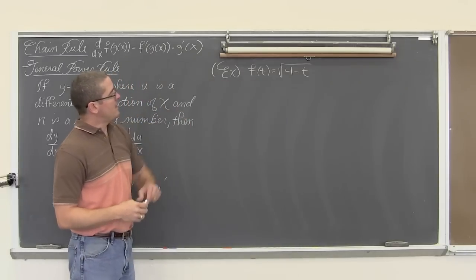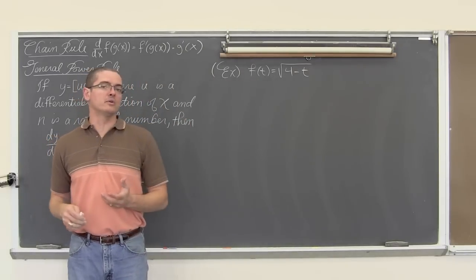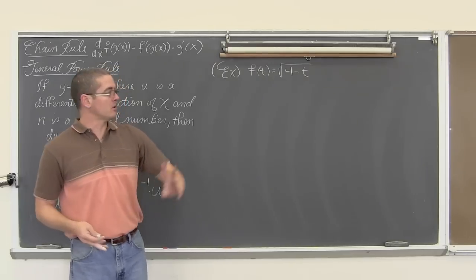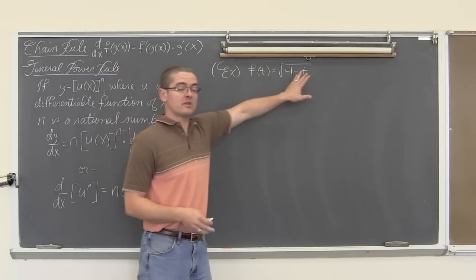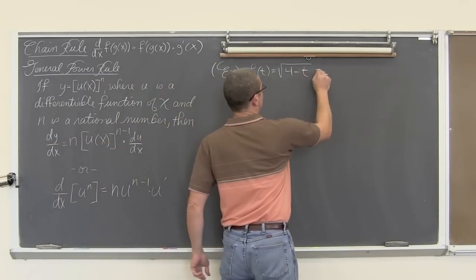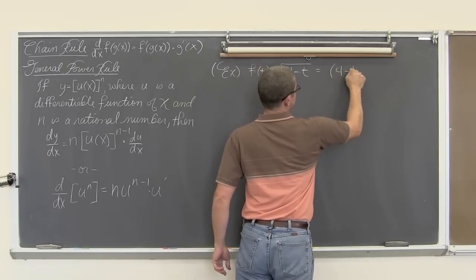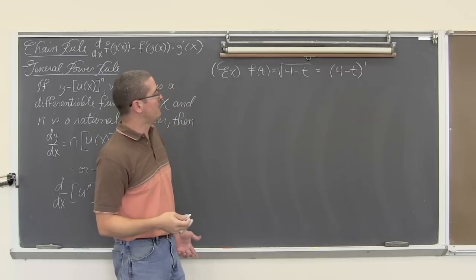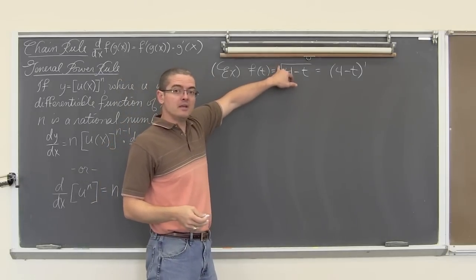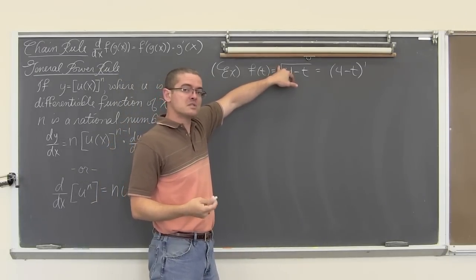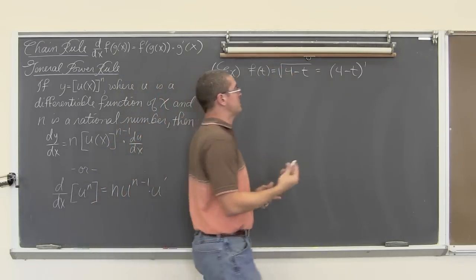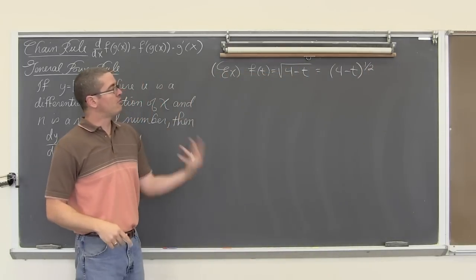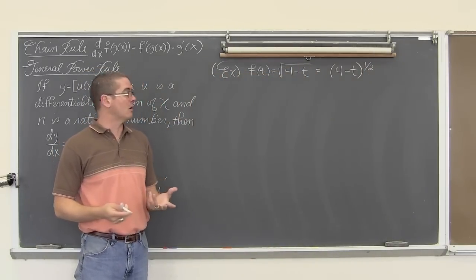So here we have f of t equal to the square root of 4 minus t. We don't like working with radicals, so I am going to rewrite this with a fractional exponent. That is going to be equal to 4 minus t raised to the one half power — the root is the second root, the square root, so the exponent is one half.